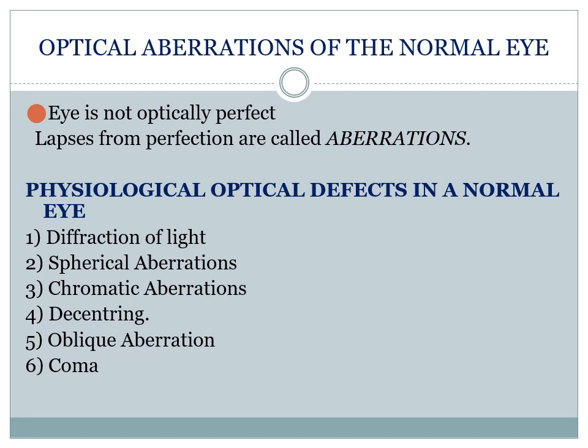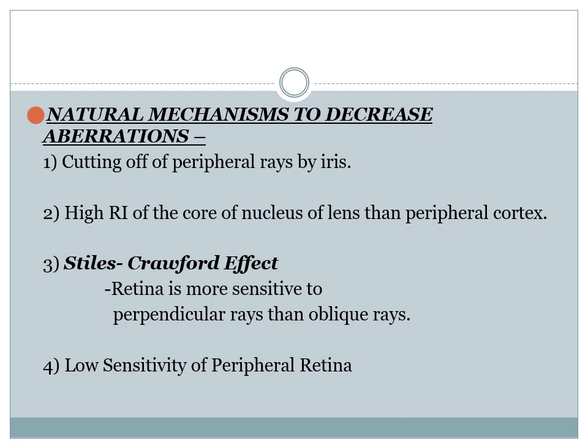The eye is not optically perfect and has lapses or defects from perfection called aberrations. Physiological optical defects in the normal eye include diffraction of light, spherical aberration, chromatic aberration, decentration, and oblique aberrations. Natural mechanisms to decrease aberration include cutting off the peripheral rays by the iris, the gradient refractive index of the lens nucleus versus peripheral cortex, the Stiles–Crawford effect whereby the retina is more sensitive to perpendicular rays than oblique rays, and the low sensitivity of the peripheral part of the retina.